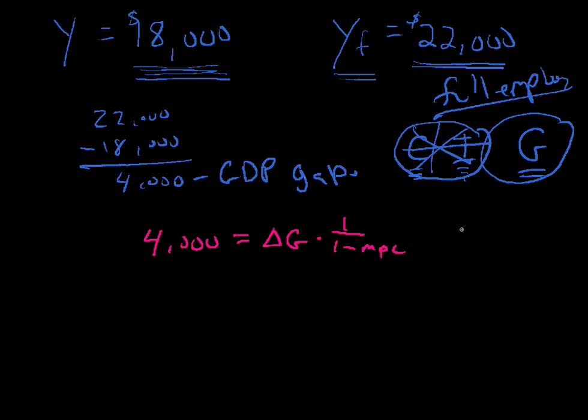So let's figure it out. If the marginal propensity to consume in this case is equal to 0.8, what do we have? We have, we need to change government spending, that delta is change, and we need to change it, not by 4,000, but by 1 over 1 minus 0.8, so we're multiplying it by that stuff there, and 1 minus 0.8 is 1 divided by 0.2, and that is 5. So we're changing government spending times the multiplier, which is 5.